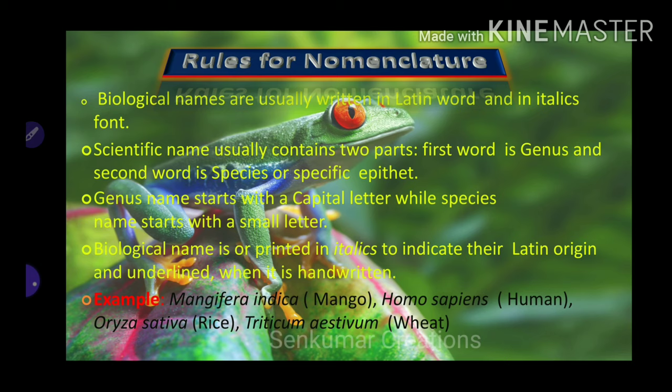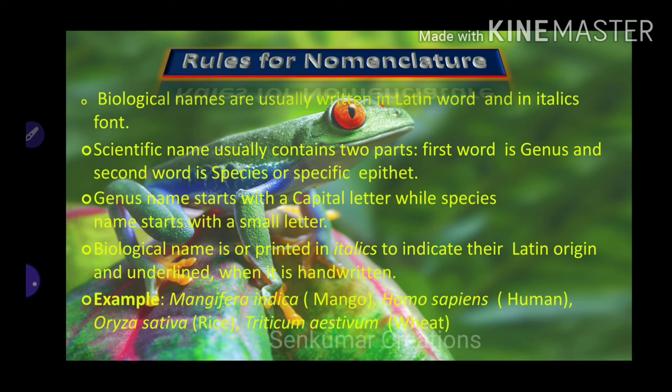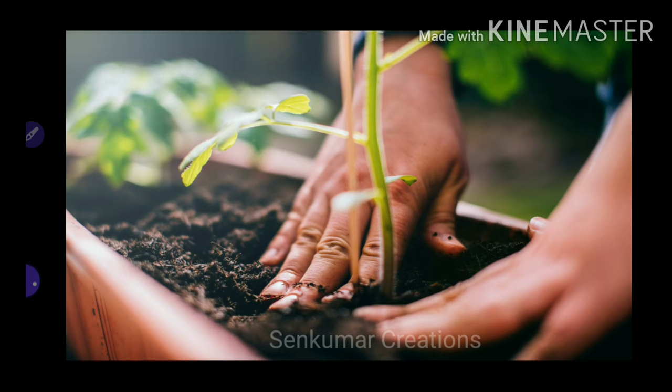Rules for nomenclature: the binomial naming system has two parts — the first part is the genus and the second part is the species. The genus starts with a capital letter and species starts with a simple letter. If handwritten, it should be underlined; when typed, it should be in italics to indicate it is derived from Latin. Examples: Mangifera indica, Homo sapiens, Oryza sativa, Triticum aestivum.